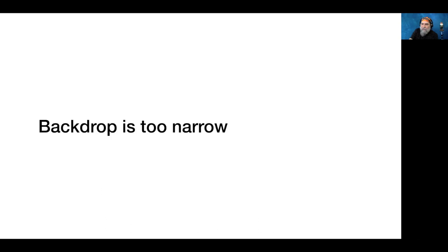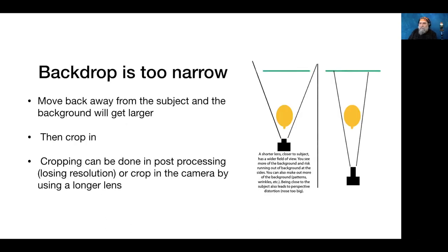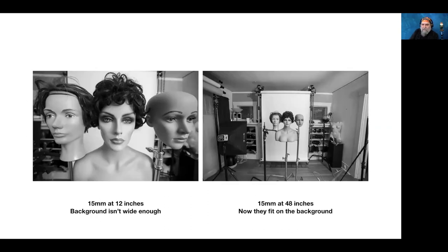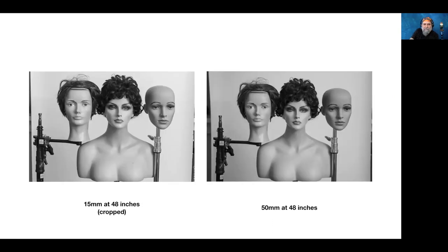If your backdrop is too narrow, you can move back from the subject and that will make the background appear wider. As you back up, the background becomes relatively larger and subjects all fit on the background. You can crop in the camera using a longer lens, or crop in post-processing and lose resolution.